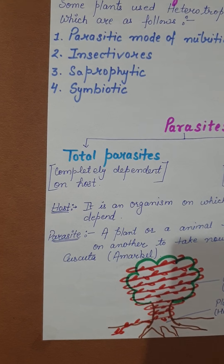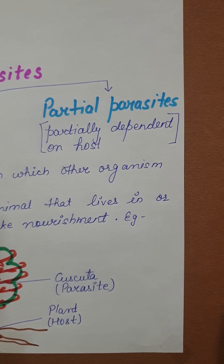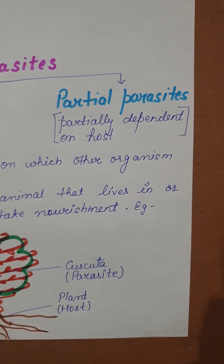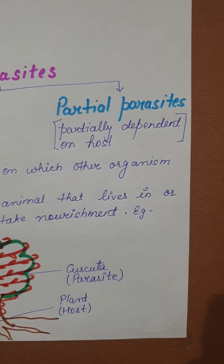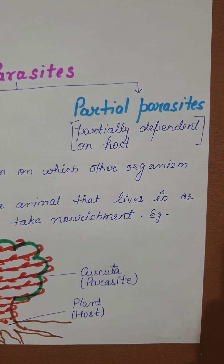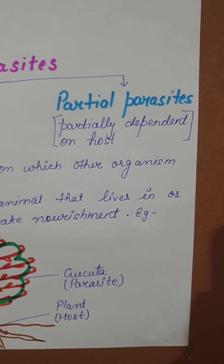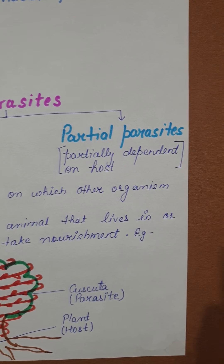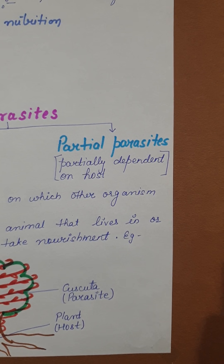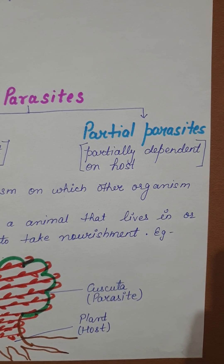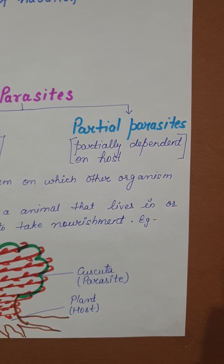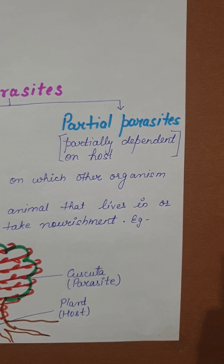Now, if we talk about partial parasites, partial parasites are those which are partially or somewhat dependent — not 100%. For example, we are dependent on our elders for some things. You can move, you can talk, you can play on your own. But for a few things, like money, you are dependent on your parents. So in that sense, you are a partial parasite.